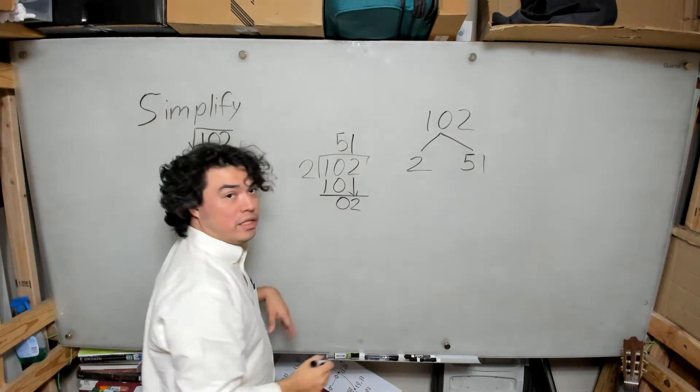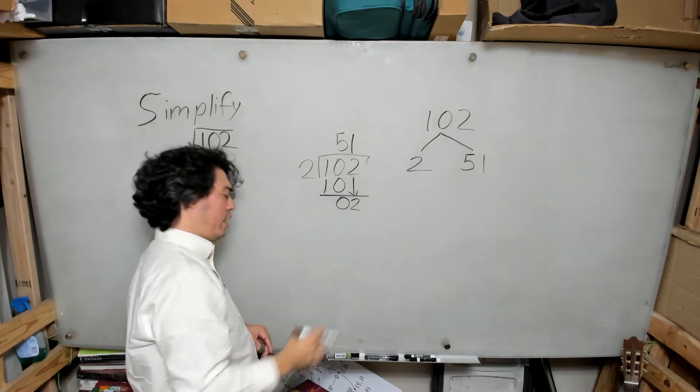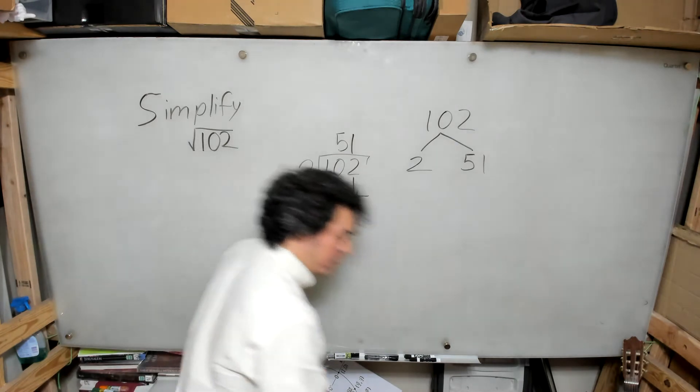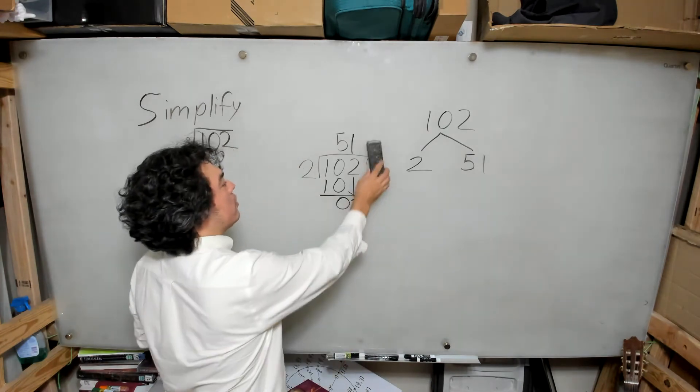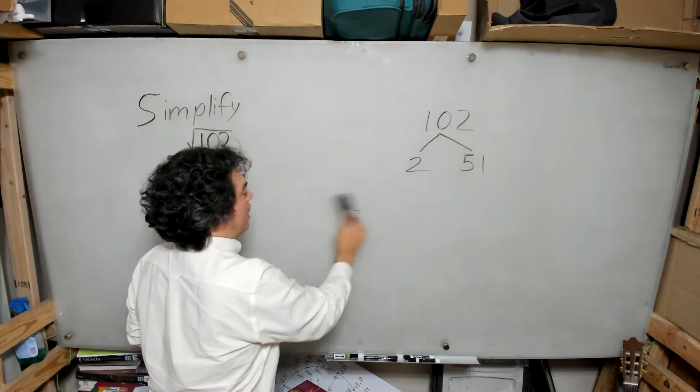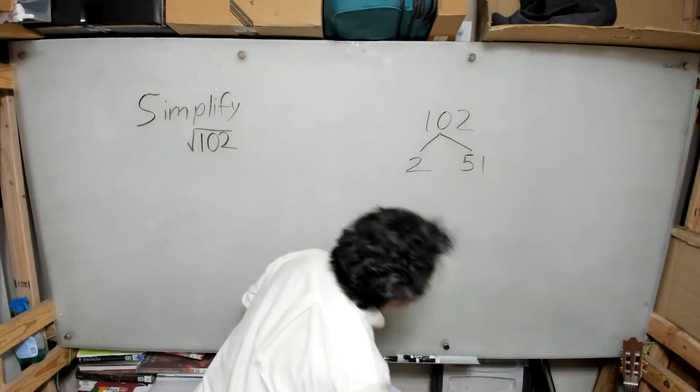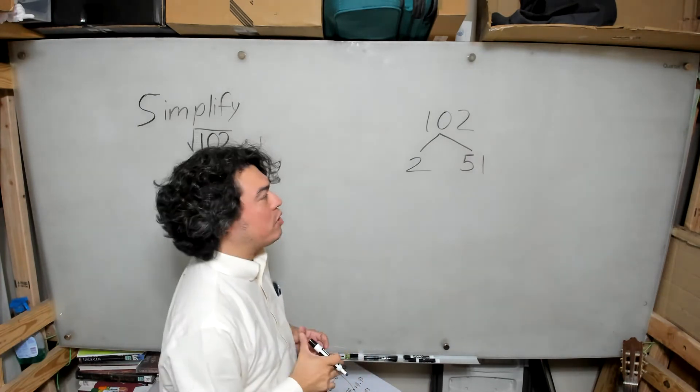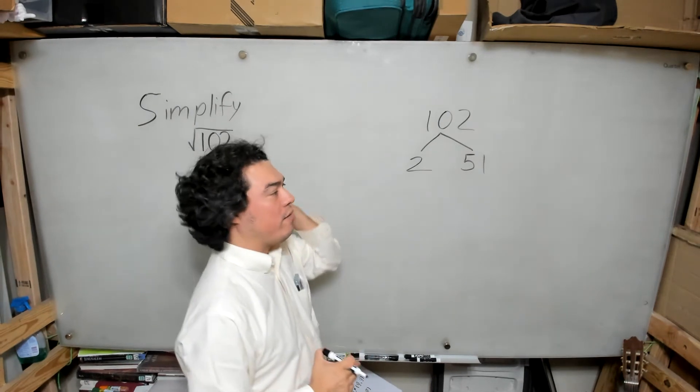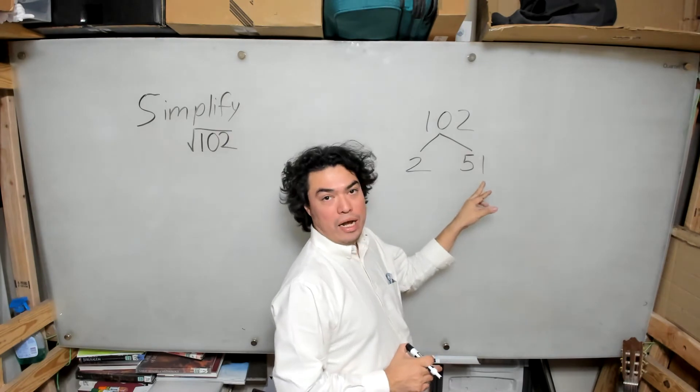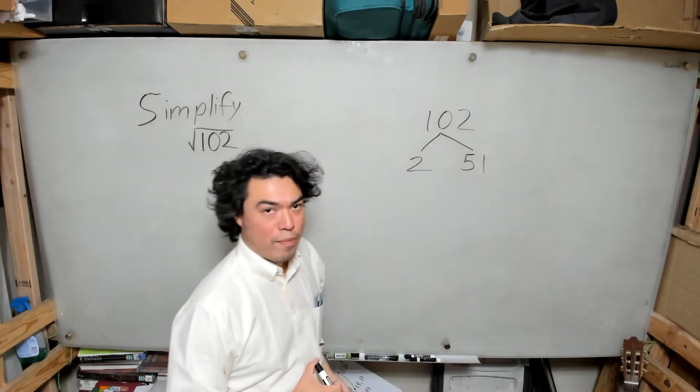Now 51 is interesting because when you first look at it you think this can't possibly factor. But then you realize if you try several numbers, let me give you a special rule here: if you add up the digits of a number and that sum is divisible by 3...